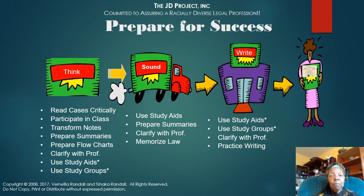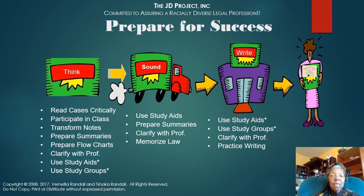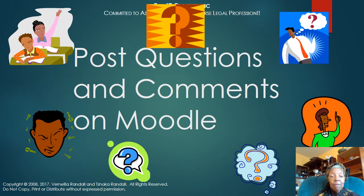We're back to our prepare-for-success motto: trust the process. Trusting the process requires you to write like a lawyer, and writing like a lawyer requires that you be able to do issue spotting, because issue spotting is the foundational skill. You will need to be able to do a lot more than issue spotting in order to pass the bar and be a good attorney. But if you can't do issue spotting well, you'll never get that far. If you have any questions or comments, post them on Moodle.